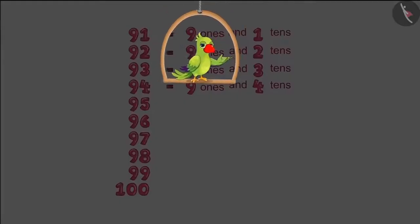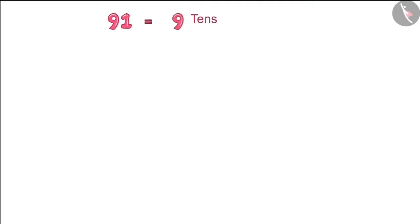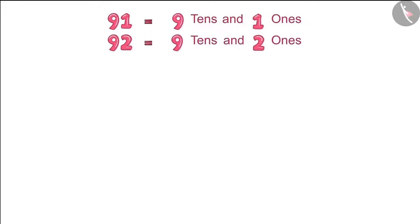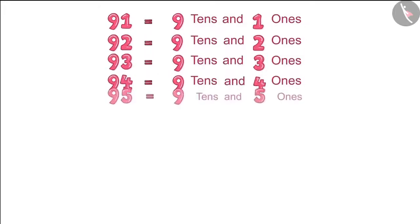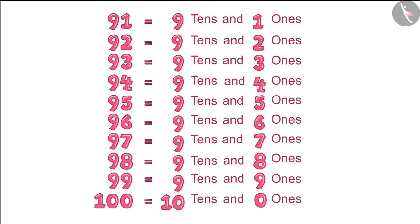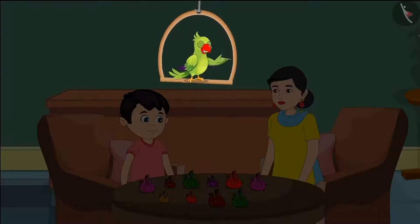Chotu and Pinkie then corrected their charts. Come on, let's see what they wrote now. It is written here that there are nine tens and one ones in 91, then there are nine tens and two ones in 92, and just like that they corrected all the numbers and wrote them down.